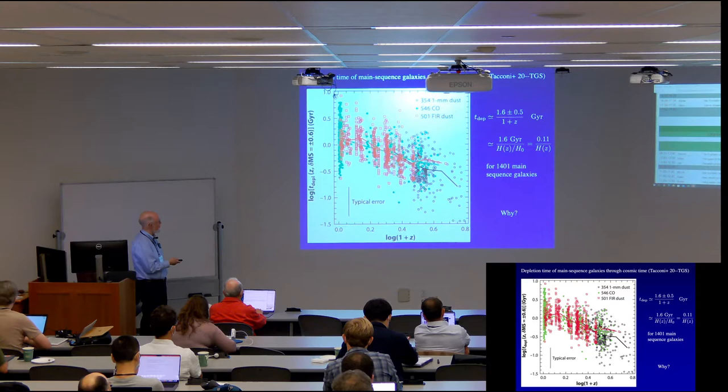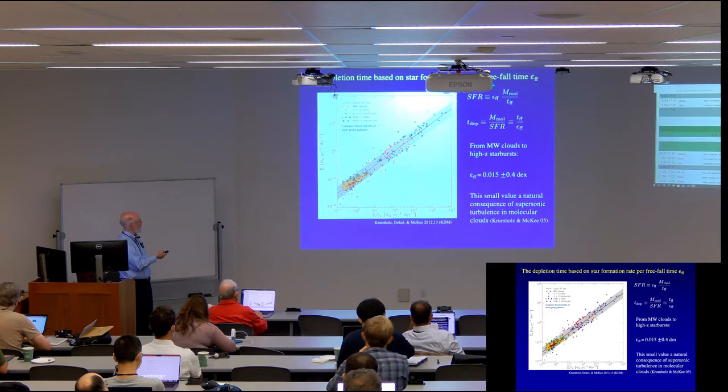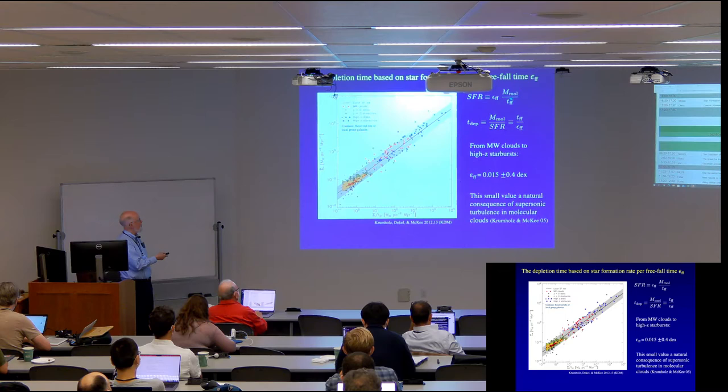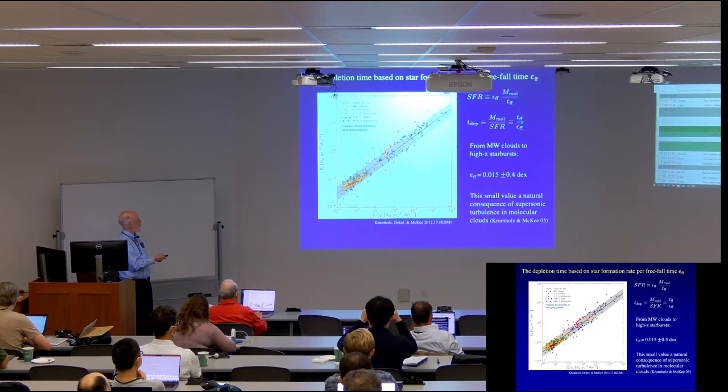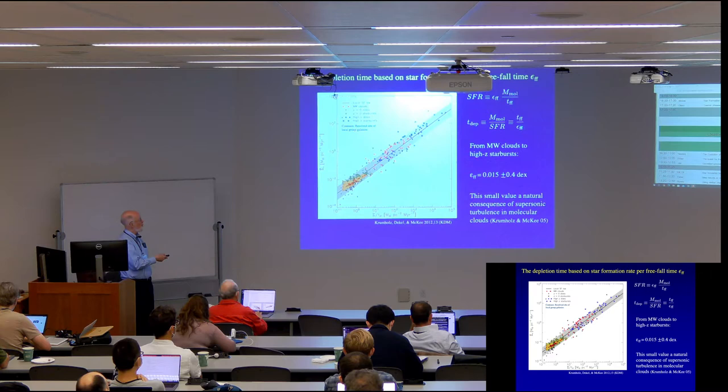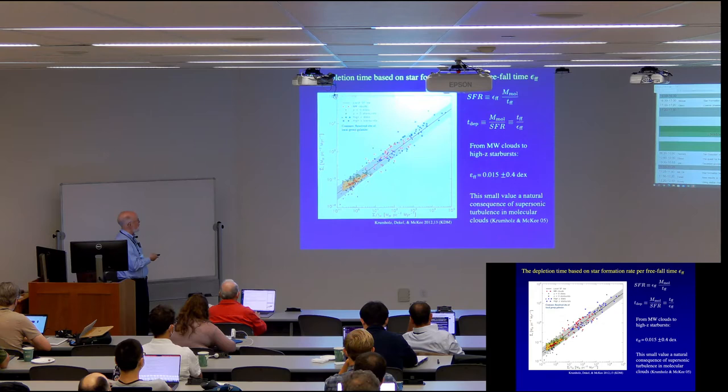So as I mentioned, my argument is going to be based on the efficiency of star formation per freefall time, epsilon ff. And that is just defined as the star formation rate is this efficiency factor times the molecular gas divided by the freefall time. So then the depletion time is the mass of molecular gas divided by the star formation rate. So you can see just from the definition, this is the freefall time divided by this efficiency factor. So if this efficiency factor is of order 1%, so what that means is that it's what would take of order 100 freefall times in order for all the gas to get turned into stars.